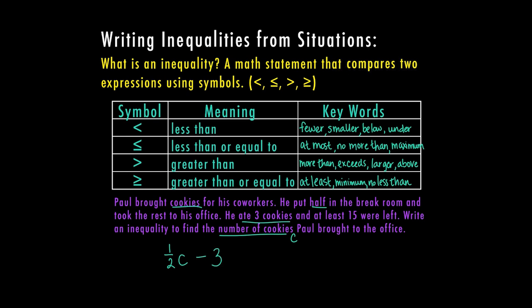So now I have half of those cookies and he ate three cookies. Again, we're still taking away the three that he ate. And it tells me that there is at least 15 left. So I know there's going to be 15 over here, but instead of an equal sign, we have at least. Well, this is where your keywords come in.